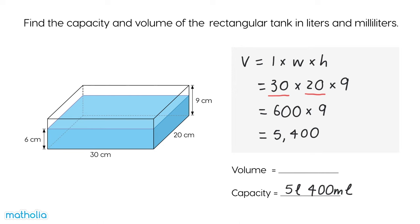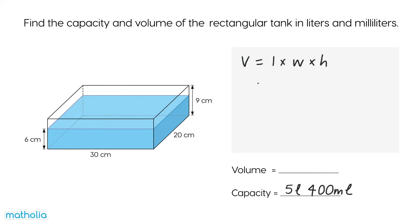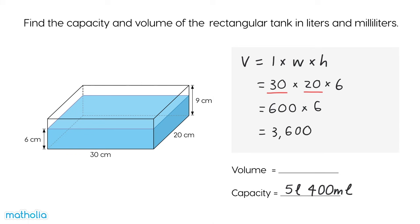Now, let's find the volume of the liquid in the container. We can see it's filled to a height of 6 centimetres. The volume of the liquid in the container is 3600 cubic centimetres, which is 3 litres, 600 millilitres.